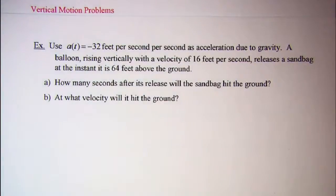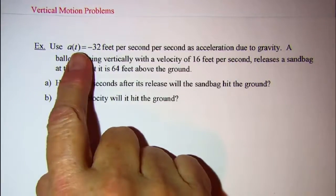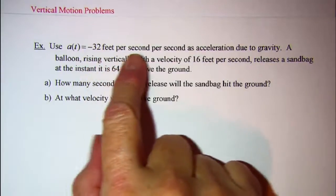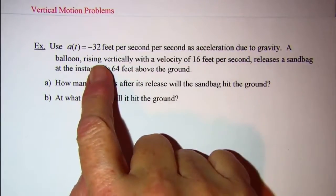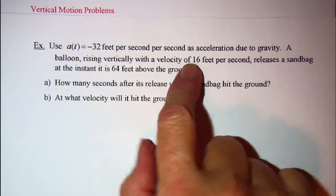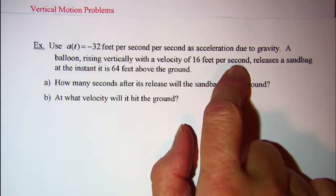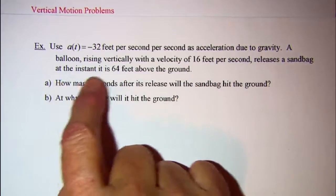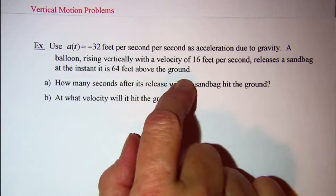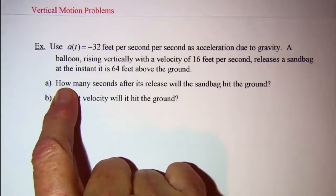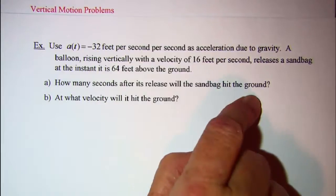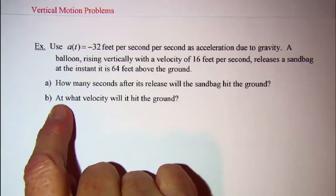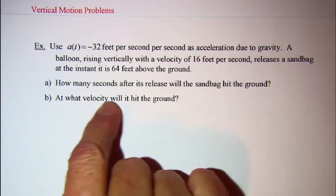In this video we will be doing a vertical motion problem. We use a(t) equals negative 32 feet per second per second as acceleration due to gravity. A balloon rising vertically with a velocity of 16 feet per second releases a sandbag at the instant it is 64 feet above the ground. We want to find how many seconds after its release the sandbag will hit the ground, and then at what velocity it will hit the ground.